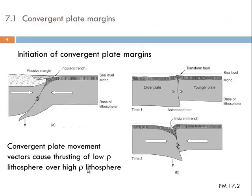Here we see how subduction is initiated in an early stage, when convergence starts between two plates. On the left-hand side we see how it can be initiated along an initially passive continental margin, a margin that grades into oceanic lithosphere. The oceanic lithosphere is thinner, has a higher density, and is usually stiffer than continental crust. In a convergent setting, the stiffer and thinner oceanic lithosphere is subducted underneath the more buoyant and less dense continental lithosphere. This is where we would initiate an oceanic trench and start subduction once a lithospheric-scale thrust zone or reverse fault is developed.